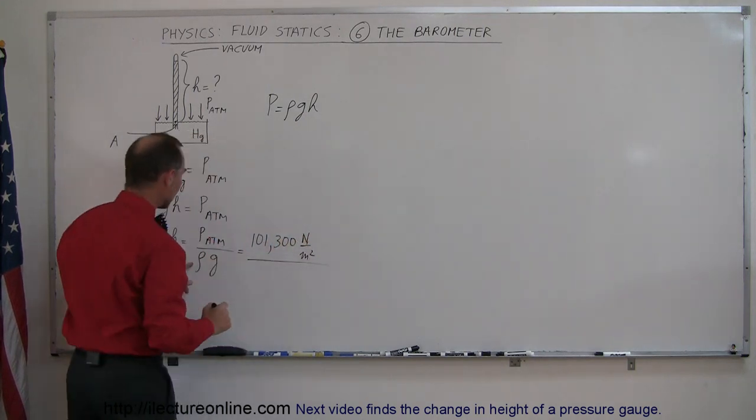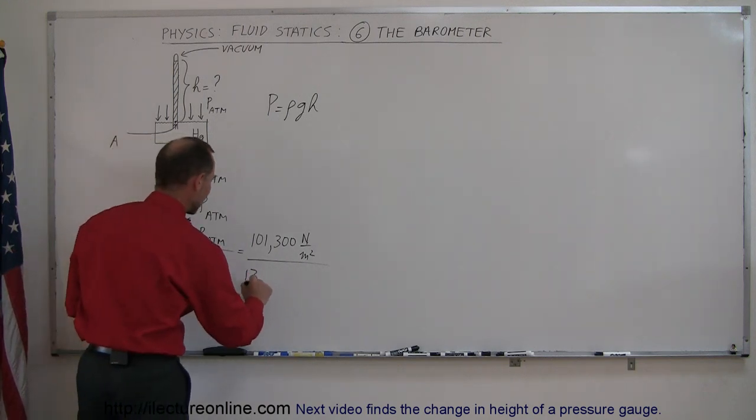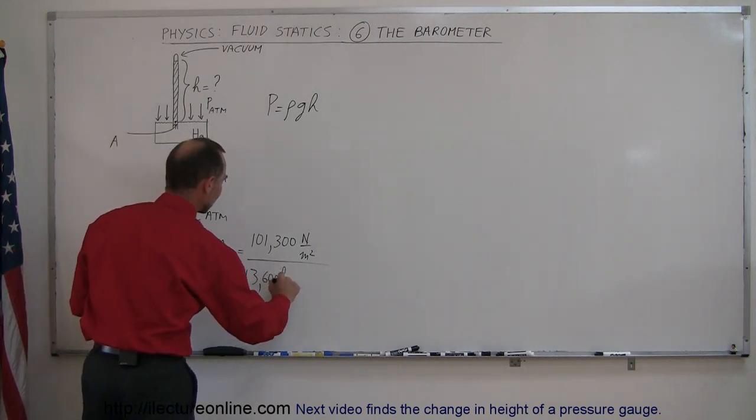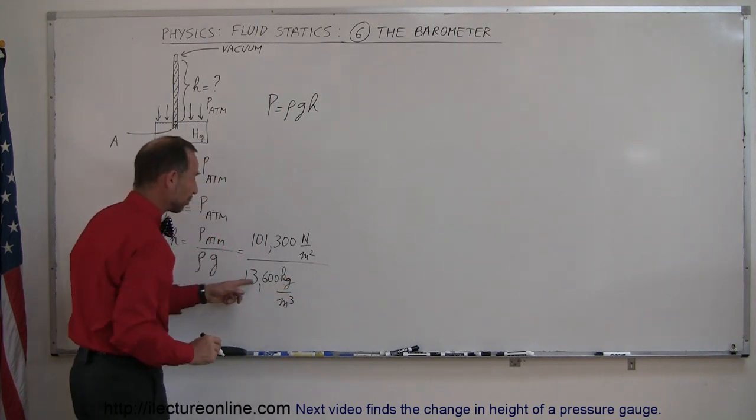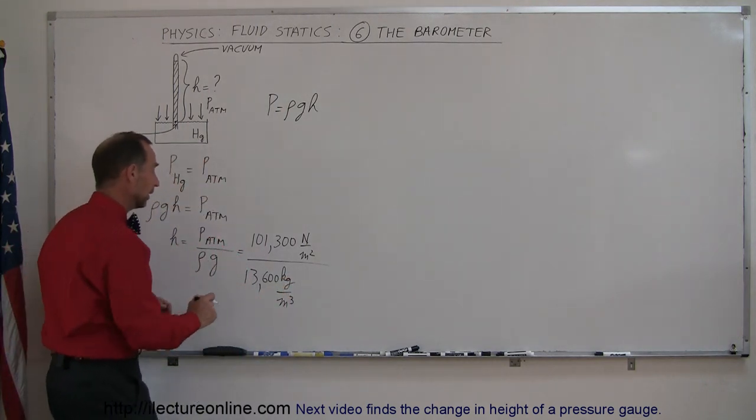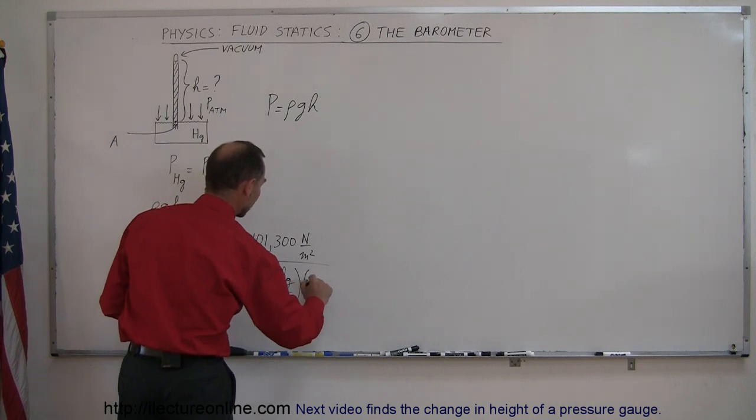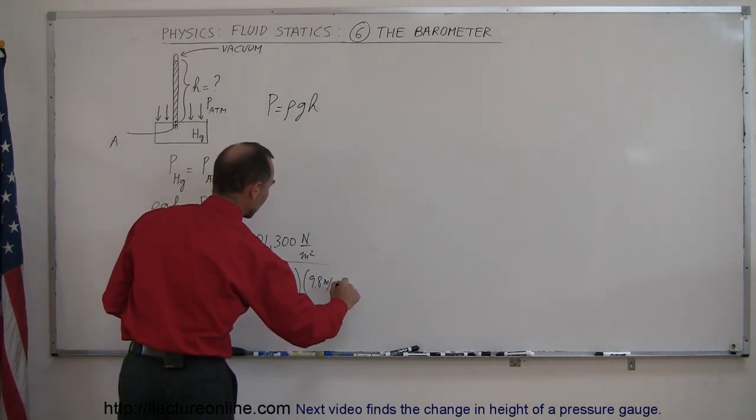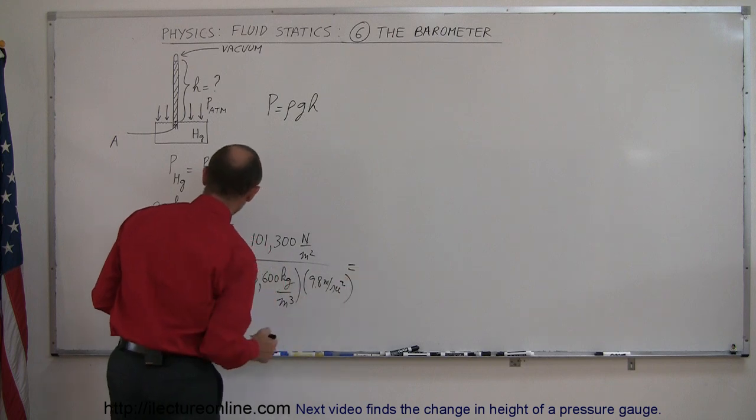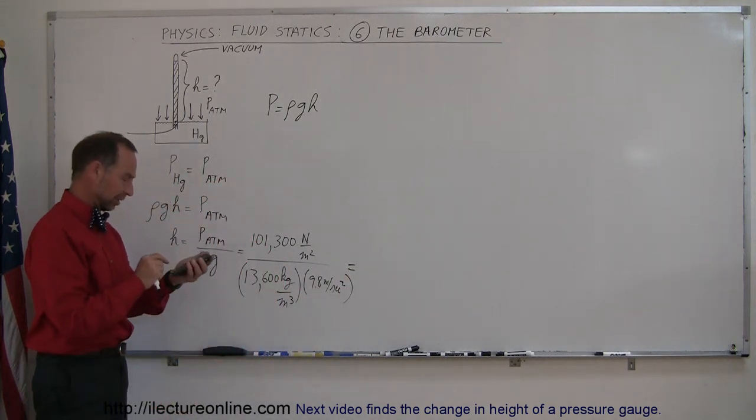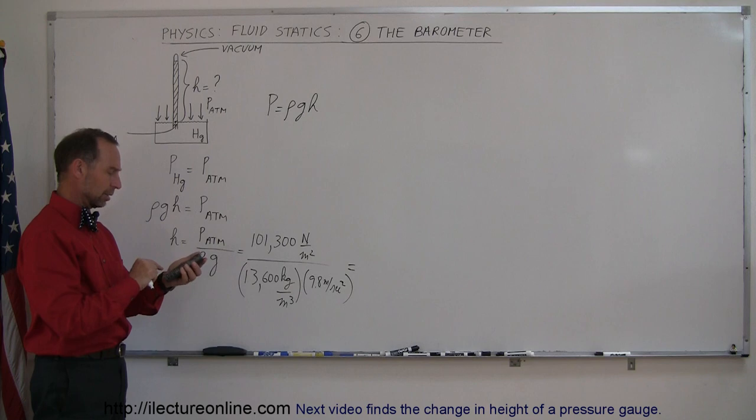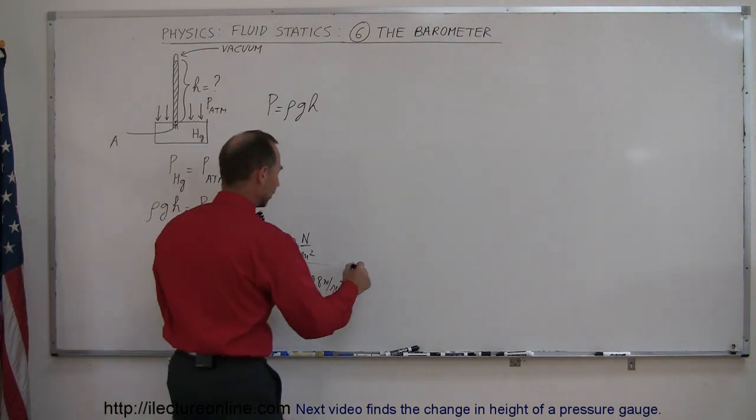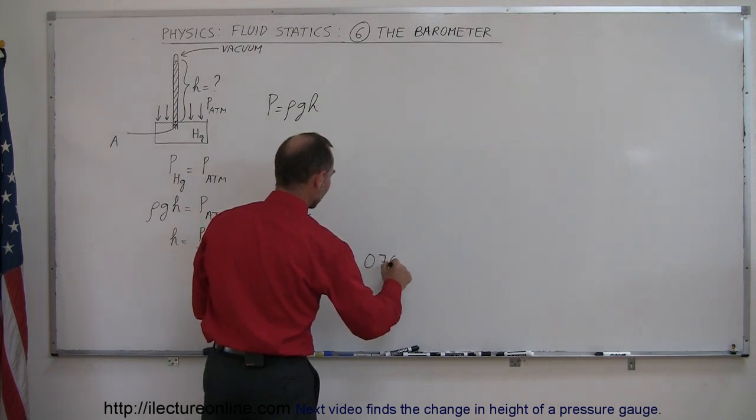So we divide that by rho. The density of mercury is 13,600 kilograms per cubic meter, which is 13.6 times as dense as water. And we multiply that times 9.8 meters per second squared. And when we do that, we get the height of that mercury column. So let's calculate that, 101,300 divided by 13,600 and divided by 9.8.